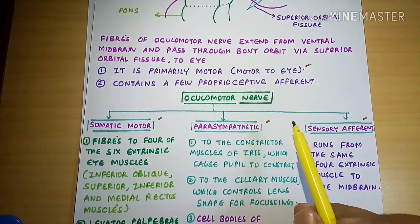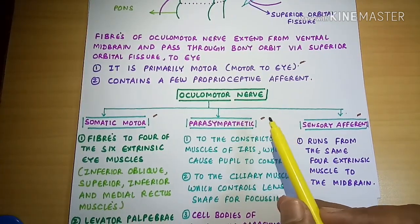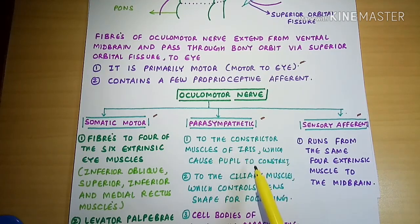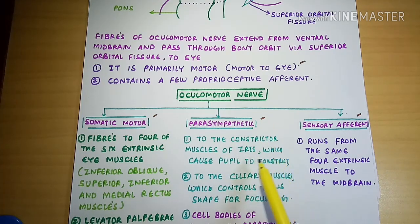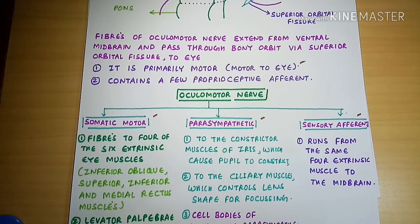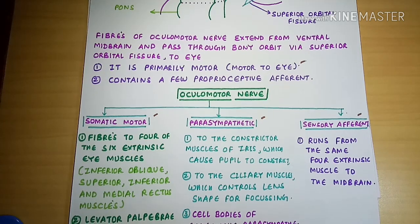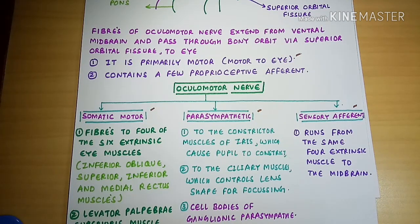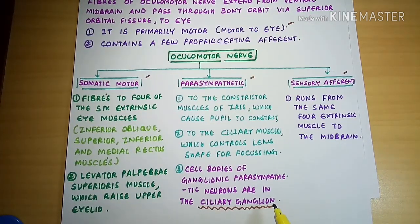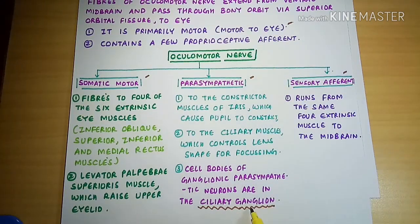The second division of the oculomotor nerve is the parasympathetic division. It supplies the iris and the ciliary muscles — specifically the constrictor muscles of the iris, which cause the pupil to constrict. It also supplies the ciliary muscles of the eye, which control the eye lens shape for focusing and accommodation. The cell bodies of the ganglionic parasympathetic neurons are in the ciliary ganglion, which is the ganglion of the parasympathetic division of the oculomotor nerve.